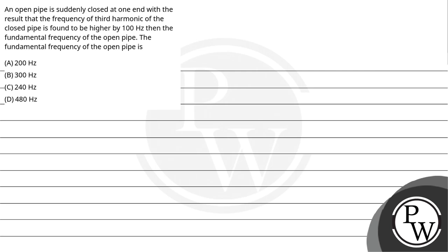Let's read the question. An open pipe is suddenly closed at one end with the result that frequency of the third harmonic of closed pipe is found to be higher by 100 Hertz than the fundamental frequency of the open pipe. The options are: A) 200 Hertz, B) 300 Hertz, C) 240 Hertz, and D) 480 Hertz.